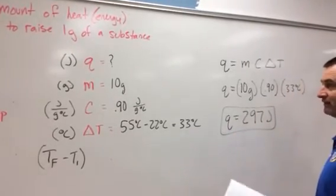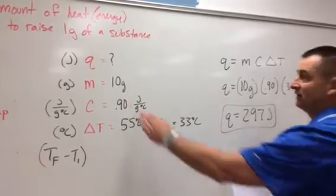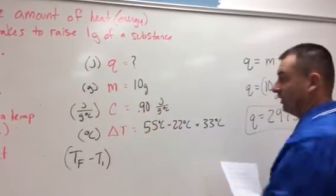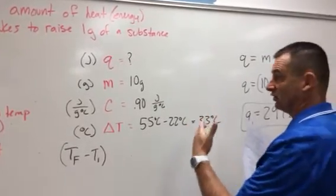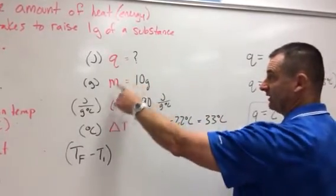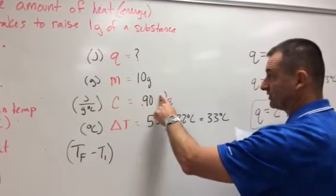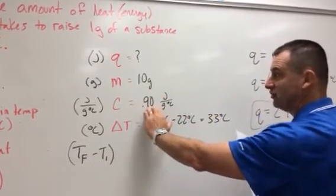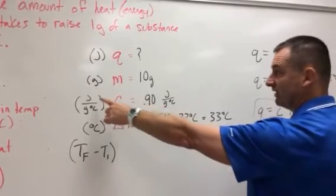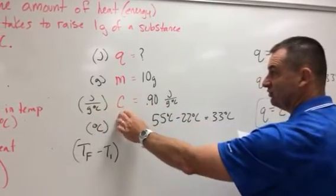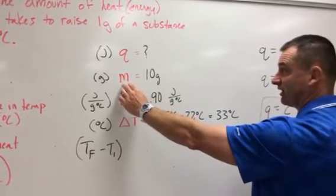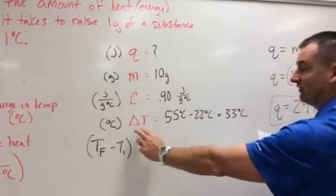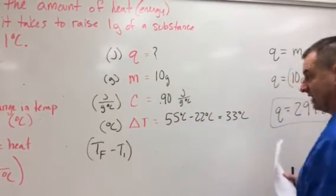For the second problem it's very straightforward — you're looking for Q and just plug in your given values. One common mistake is when given joules, students misplace it in the formula. Remember: let the units guide you. If you're given joules per gram degree Celsius, that's C. If you're given just grams, it's M. If you're given just joules, it's Q. If you're given just degrees Celsius, it's delta T.